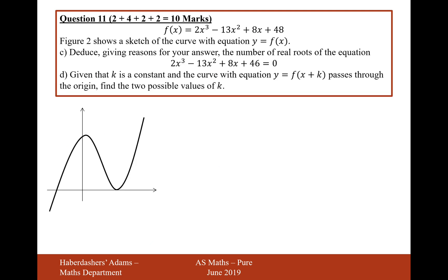Let's now move on to part C. Figure 2 shows a sketch of the curve y equals f of x. Deduce, giving a reason for your answer, the number of real routes of the equation of 2x cubed minus 13x squared plus 8x plus 46 equals 0. It's different to the 48s that we have in our equation. Let's just take the equation they want us to solve. They want us to solve this equation, but we've only got this graph here, which is of the f of x function.